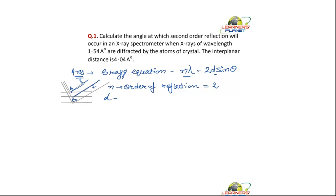Now what is the distance between the two plates? It is 4.04 angstrom. And what is the wavelength? It is 1.54 angstrom.